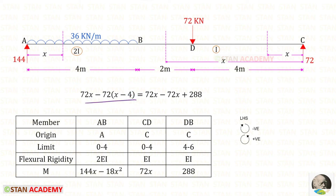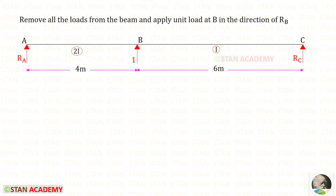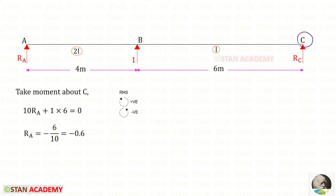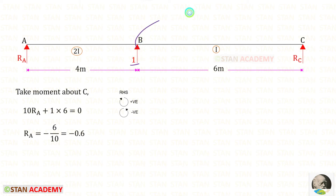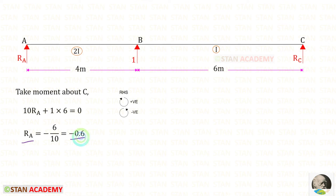Now we find small moment m. We remove all loads from the beam and apply a unit load in the direction of Rb. Taking moments about C to find Ra: Ra acts clockwise with distance 10, and the unit load acts clockwise with distance 6. For Ra we get a negative value, meaning the assumed upward direction is incorrect — Ra actually acts downward.